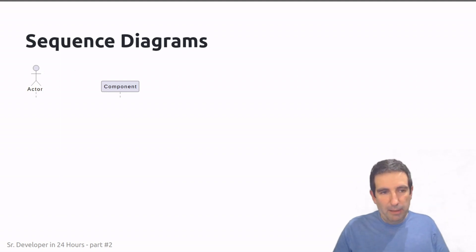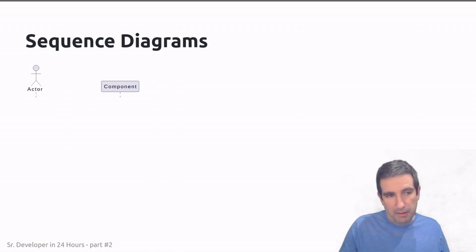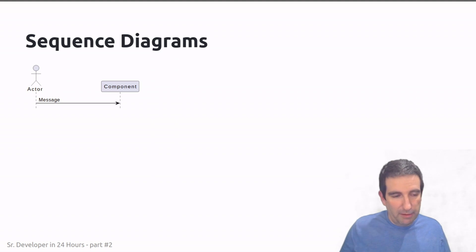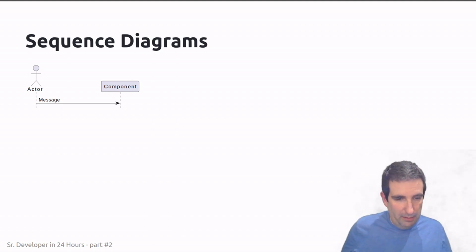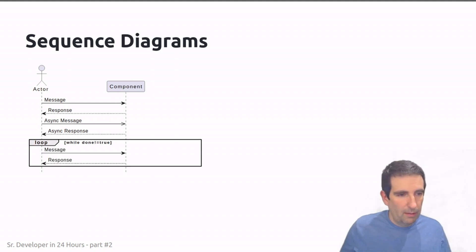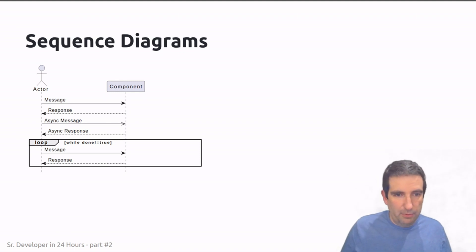In sequence diagrams we can have actors and components. There's a swim line — the vertical line dropping down from each actor or component — and horizontal lines showing messages going between them or responses coming back. We can also keep track of asynchronous messages as opposed to synchronous messages, and we can use constructs to show loops and while loops to fully describe the interaction between components.